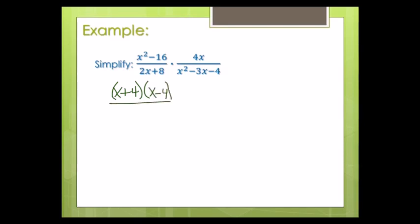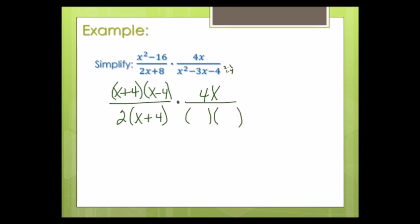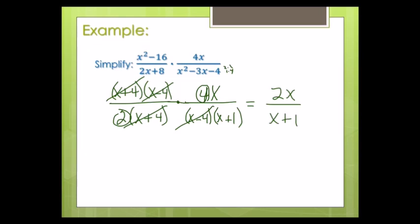On the bottom of the first fraction, I can do GCF — there's a two in common, giving me 2(x+4). The second fraction's numerator is just 4x. For the second denominator, I use slide and divide with a leading coefficient of one, looking for factors of four. That's one and four, giving me (x−4)(x+1) since I need negative three. Making one big fraction, x+4 cancels with x+4, x−4 cancels with x−4. Four over two simplifies to two. Final answer: 2x over (x+1).